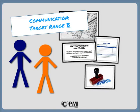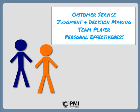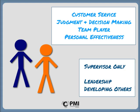To finish the process of setting target ranges, this same process of considering each target range should now be repeated for the next four competencies, which are customer service, judgment and decision making, team player, and personal effectiveness. The last two competencies, leadership and developing others, are reserved for supervisors and do not apply to Blue and Orange.